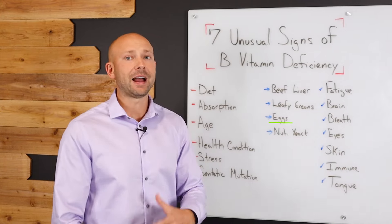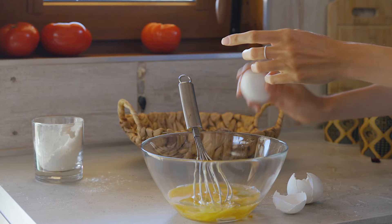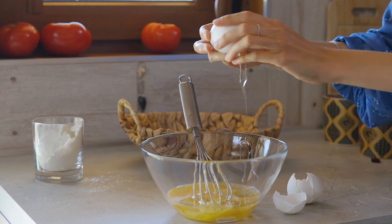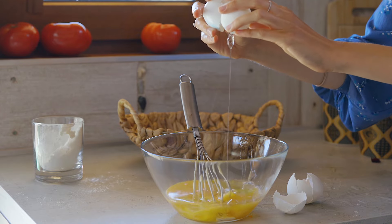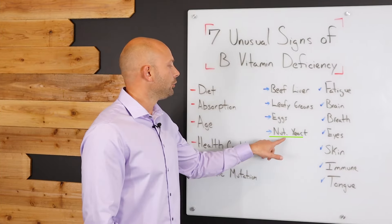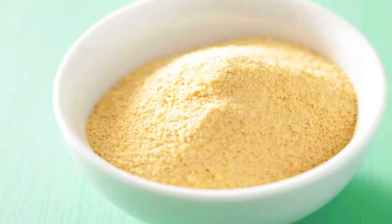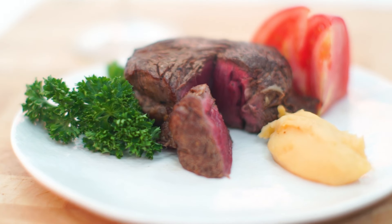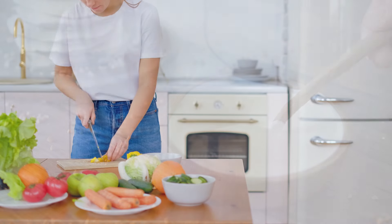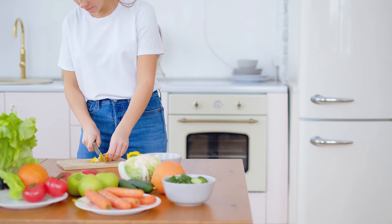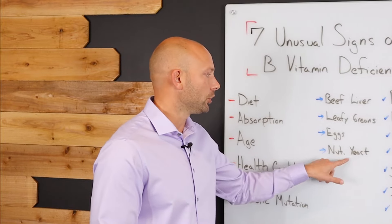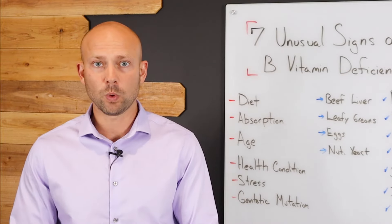Now, eggs is another big factor here that will give you some good B vitamins. That's one of the benefits of eggs. It's like nature's multivitamin, but it has a good array of B vitamins in it as well. And then nutritional yeast. This is something that you can buy. You could sprinkle it on your meals. You could put it on a yogurt. You could put it on your dishes that you're making. You could even supplement with nutritional yeast because this can be a good source of B vitamins as well.